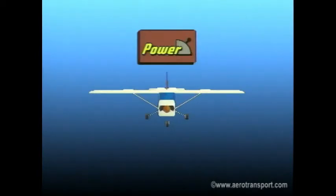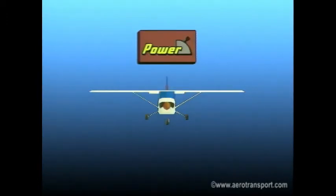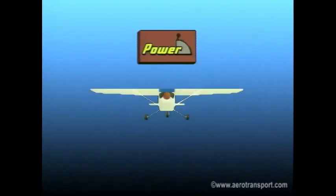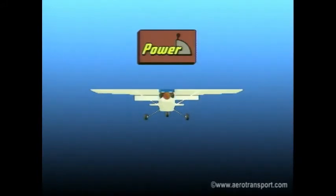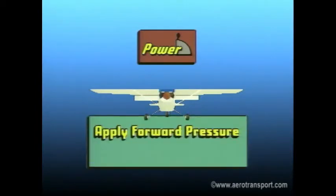Occasionally you may find yourself having to go around or pull up from an approach to landing to enter a climb. When the aircraft is in the landing configuration, apply takeoff power promptly and smoothly while putting the aircraft in the nose-up attitude. You will have to visually estimate this attitude. If the flaps are fully extended, since the trim was set for a landing, it is likely the application of power will raise the nose. Be prepared to put forward pressure on the column.